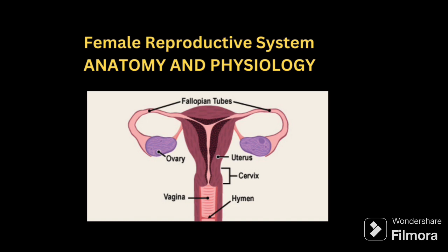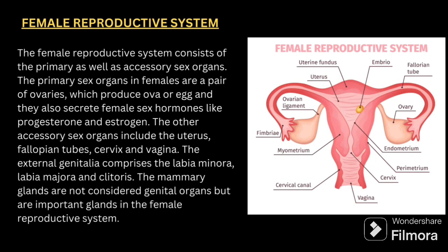The points are very easy so you can make a note and it will be helpful for your preparation. First, the definition: the female reproductive system consists of the primary as well as accessory sex organs. The primary sex organs in females are a pair of ovaries which produce ova or eggs, and they also secrete female sex hormones like progesterone and estrogen.